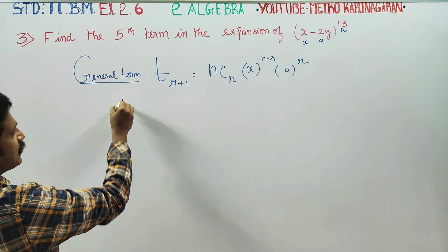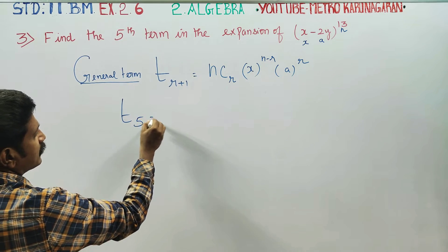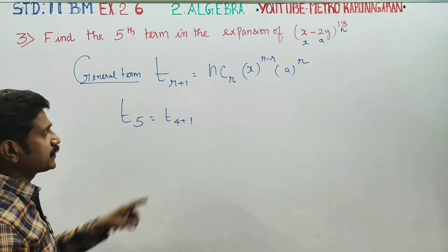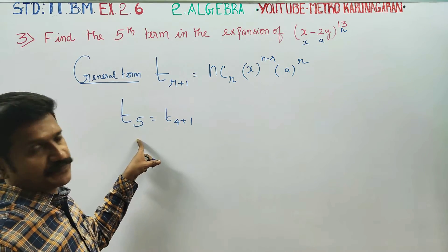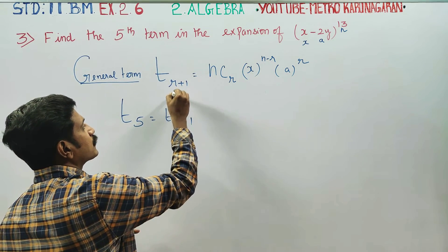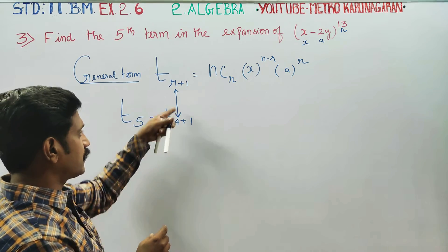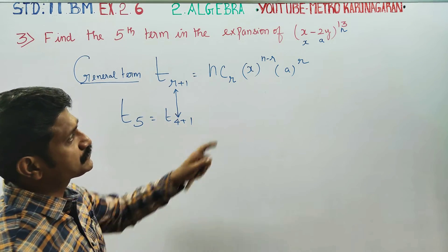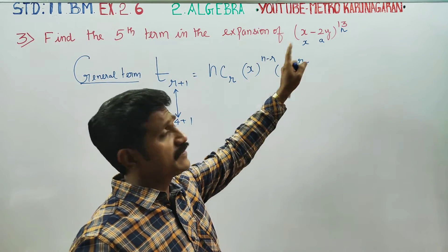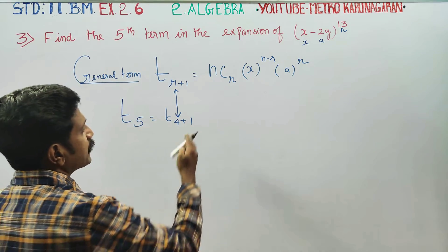We are asked to find T5. T5 means T(4+1), so R = 4. Now we need to substitute the values of R, N, X, and A into the formula.